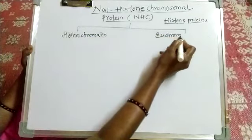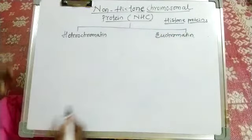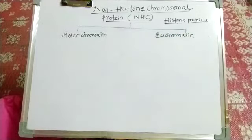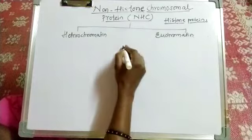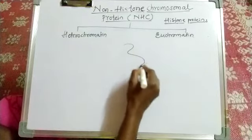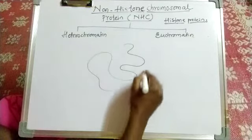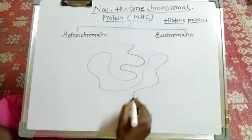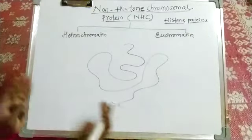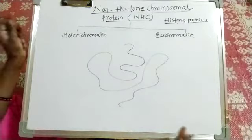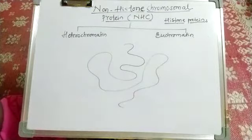We have a structure of chromatin fiber. At interphase, the chromatin fiber is completely relaxed and the DNA is spread.